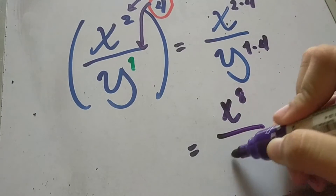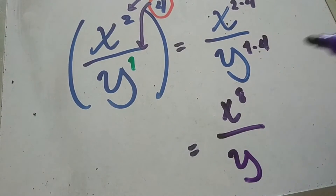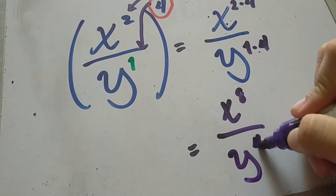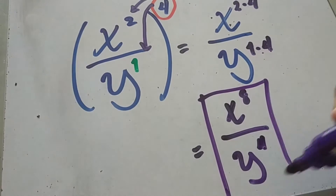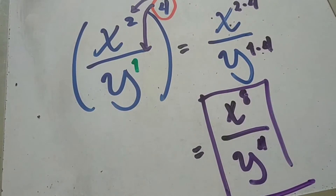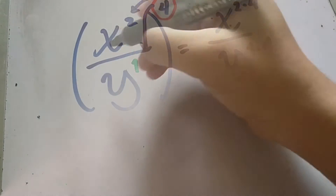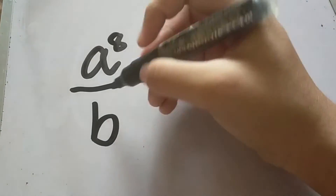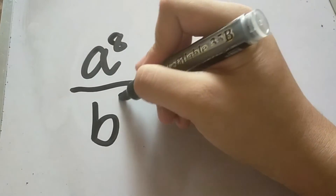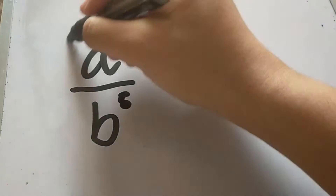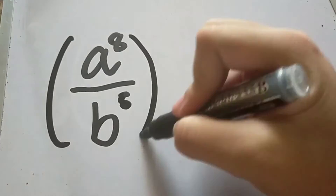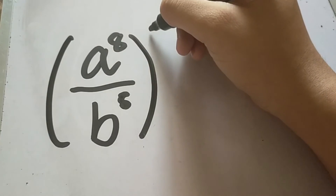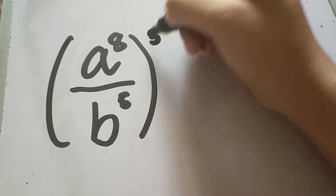To simplify, we have x raised to 8 over y raised to 4, and that will be your final answer. Another example: we have a raised to 8 over b raised to 5, and they are all raised to an exponent of 3.